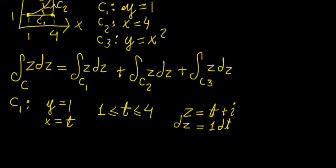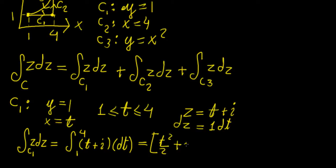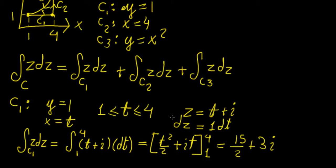We can now calculate the integral directly. We have the integral from 1 to 4 of (t + i) dt. Integrating gives us t²/2 + it evaluated from 1 to 4, which equals 15/2 + 3i.